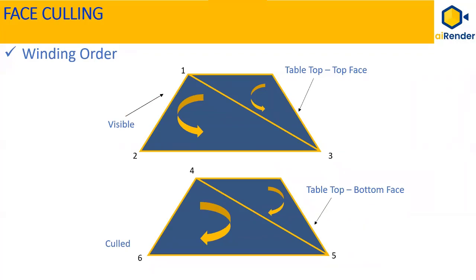The top face and the bottom face of the table top are rectangular in shape and are made up of two triangles each, as discussed in the previous classes.